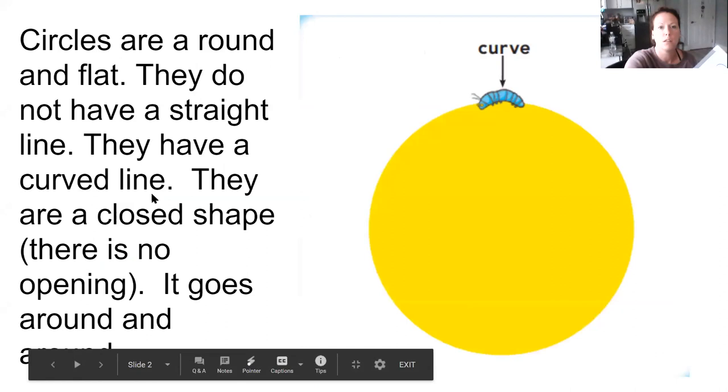Here I have a couple of different sized circles and different colored circles. Circles are round and curved. When you talk about a circle, you want to remember that they are round and they're curved. It's a curved line and they don't have corners.